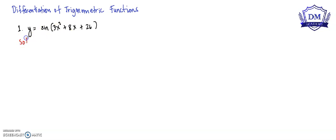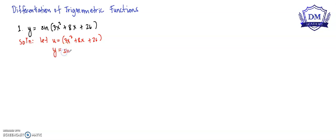We let u be equal to 3x squared plus 8x plus 26, so our function y is sine of u. The derivative of y with respect to x, using the chain rule, is equal to the derivative of y with respect to u times the derivative of u with respect to x.